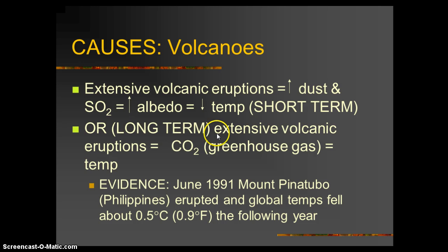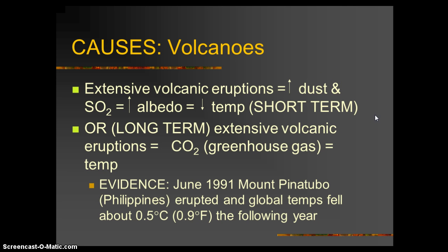Long-term, though, with extensive volcanic eruptions, there's more than just dust and sulfur dioxide coming out. There's actually CO2, and CO2 is a greenhouse gas. Once the dust settles, now you have CO2 floating around. As a greenhouse gas, that will increase the temperature. So volcanic eruptions also put out CO2. Once the dust settles, the albedo lowers again, and now the greenhouse gas kicks in, taking in that energy and converting it into heat — therefore increasing the temperature in our system.